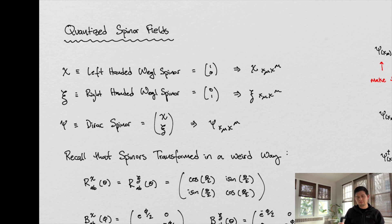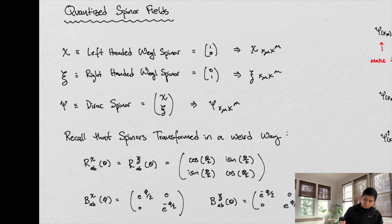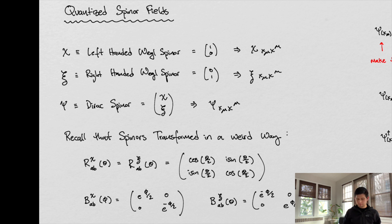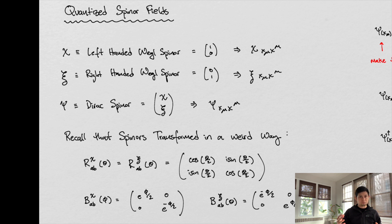When we talk about quantizing our spinor fields, let's first refresh ourselves. Back in chapter three we talked about left-handed Weyl spinors and right-handed Weyl spinors — two linearly independent spinors that can be described as two-by-one matrices. You can make them functions of space and time through the prescription we discussed. Then we talked about the Dirac spinor, which was a combination of the Weyl spinors, and we can make those functions of space and time as well.